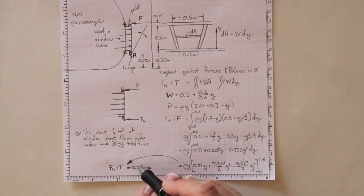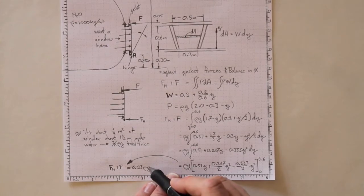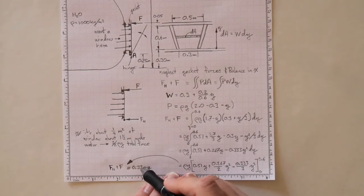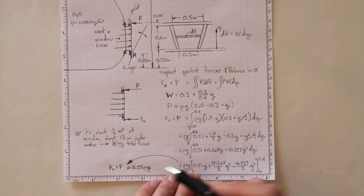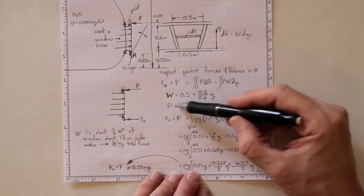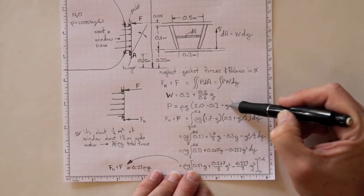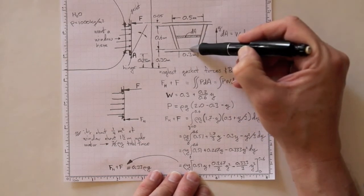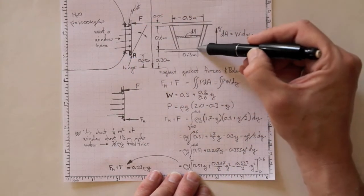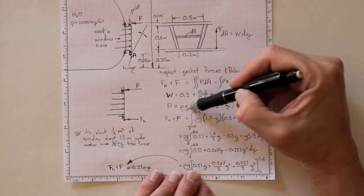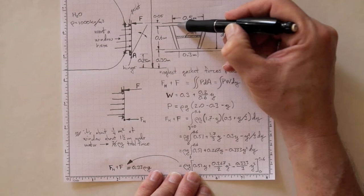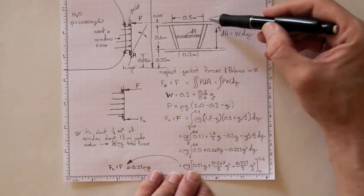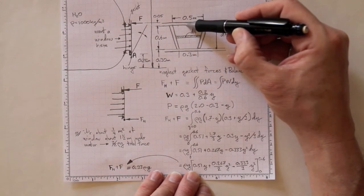F_H plus F equals 0.33 times ρg. Now does that make sense? It's obviously going to depend on the density of the water and gravity, but does this 0.33 make sense? Let's do a test to make sure we got everything right. First, let's test on our pressure: p equals ρg times (2 minus 0.3 minus y). When y is equal to 0, it's 1.7ρg — that makes sense because we're 1.7 meters under the water. When y is equal to 0.6, it's 1.1ρg, and that makes sense because we're 1.1 meters under the water. The pressure decreased as we went up in the vertical direction, so that's a good check. I think we got this one right.